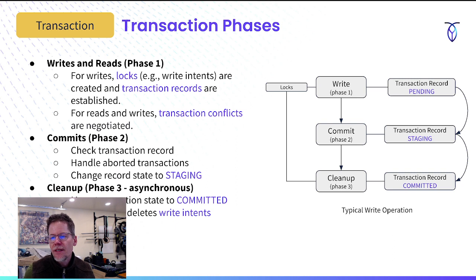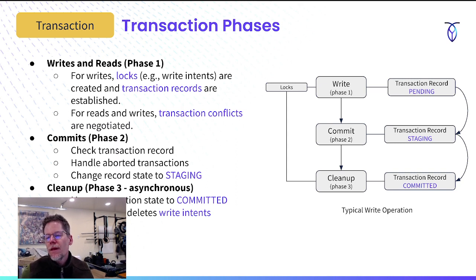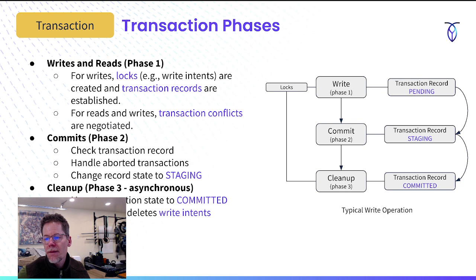In the second phase is where the commit happens. We check the transaction record, handle any aborted transactions, and change the transaction record state to staging. Then during cleanup, which runs asynchronously, the transaction state is moved to committed and any write intents are resolved and deleted.